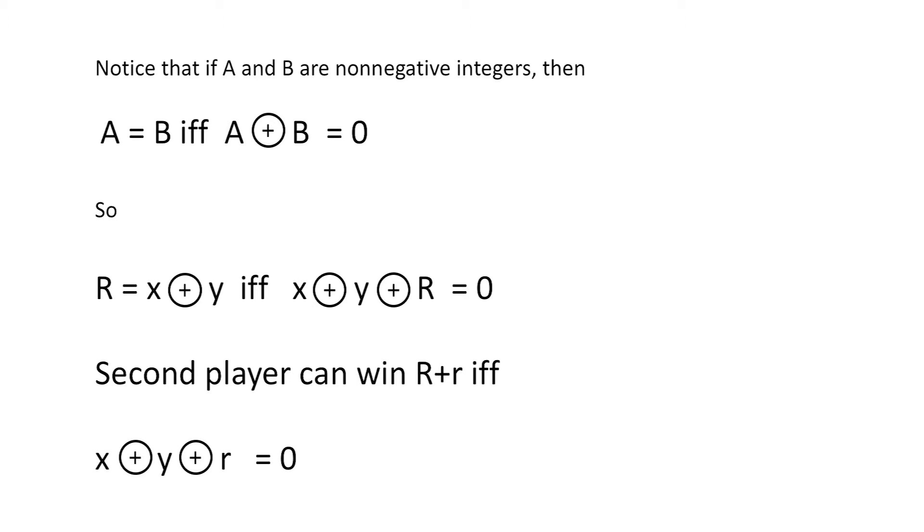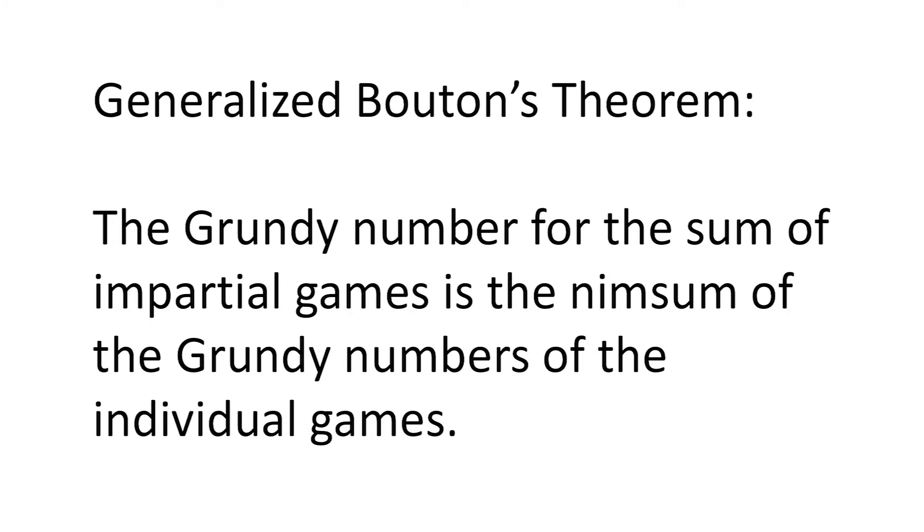This suggests the following generalization of Botan's theorem: the Grundy number for the sum of impartial games is the nim sum of the Grundy numbers of the individual games.